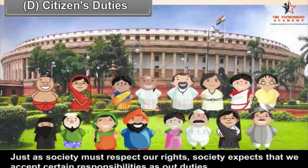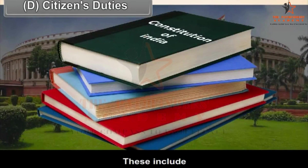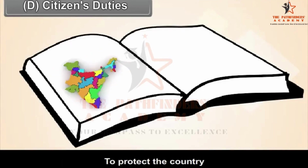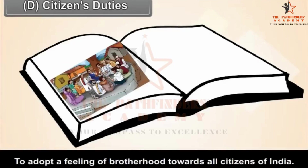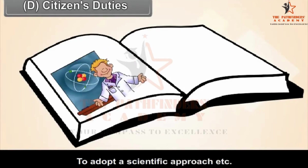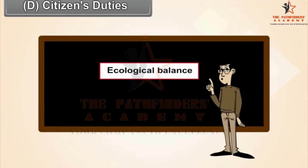Some duties are listed in the Constitution as fundamental duties. These include: to respect the Constitution, to respect the national flag and national anthem, to protect the country, to adopt a feeling of brotherhood towards all citizens of India, to protect the environment, and to adopt a scientific approach. Is there punishment if these duties are not performed?